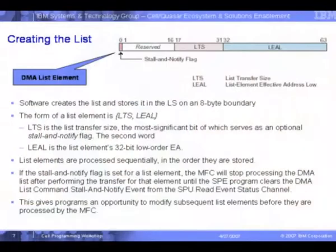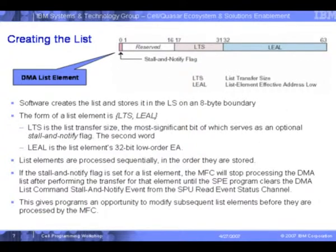The local store address increments as well — you need to specify a starting effective address and a starting local store address. Once you specify the starting local store location that will contain all this data, every time data is fetched through each list element, the address keeps incrementing. A list element looks like this: there is a transfer size field, an LTS field, an effective address low field, and optionally a stall and notify bit that can be set.